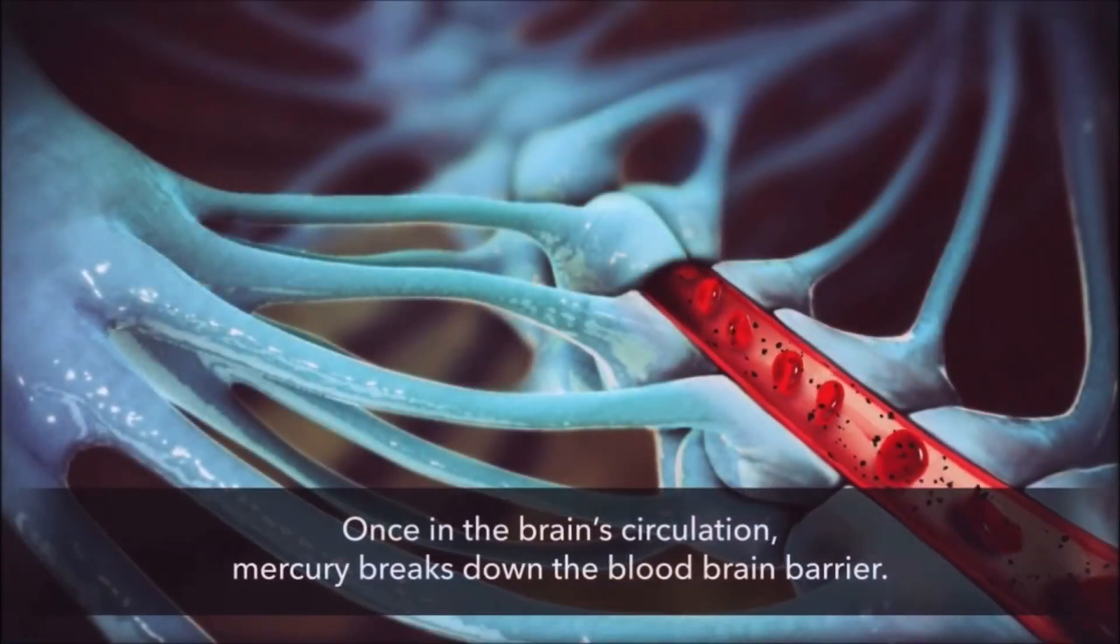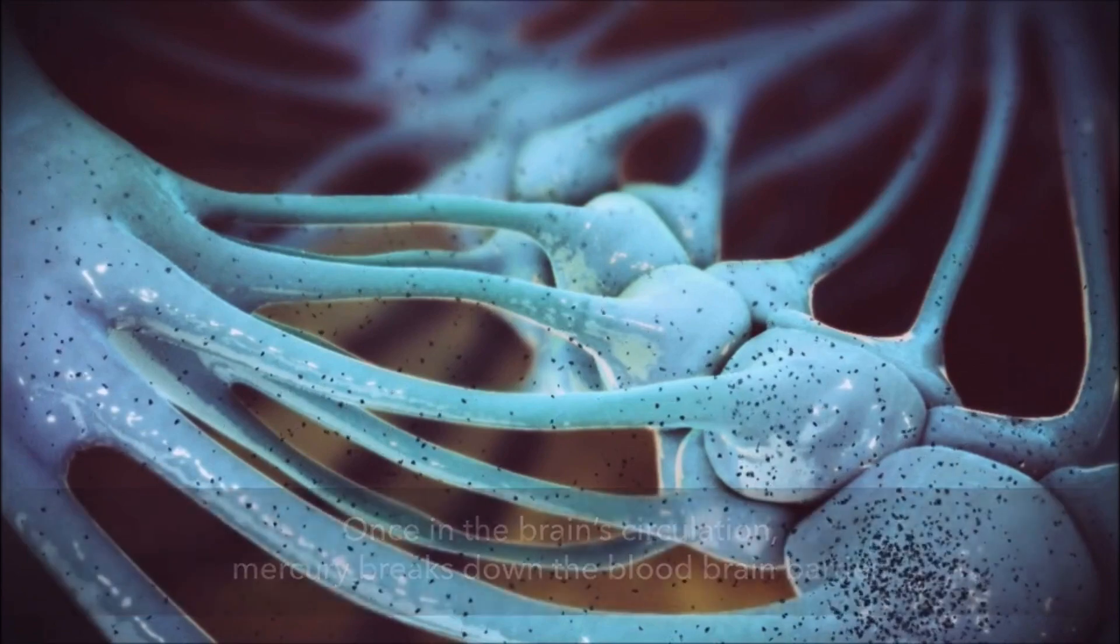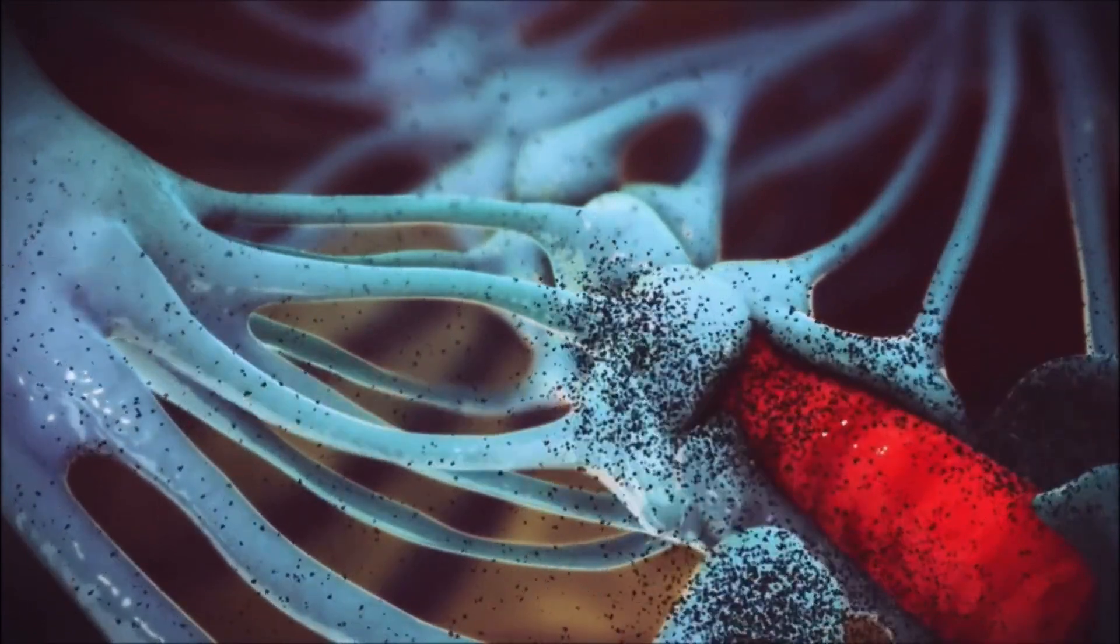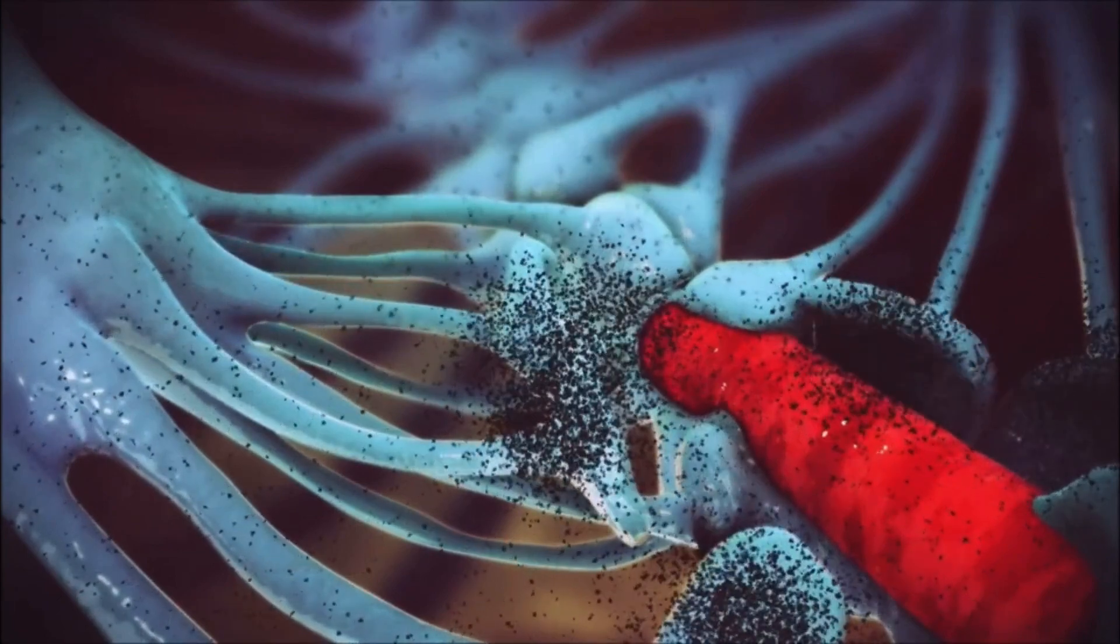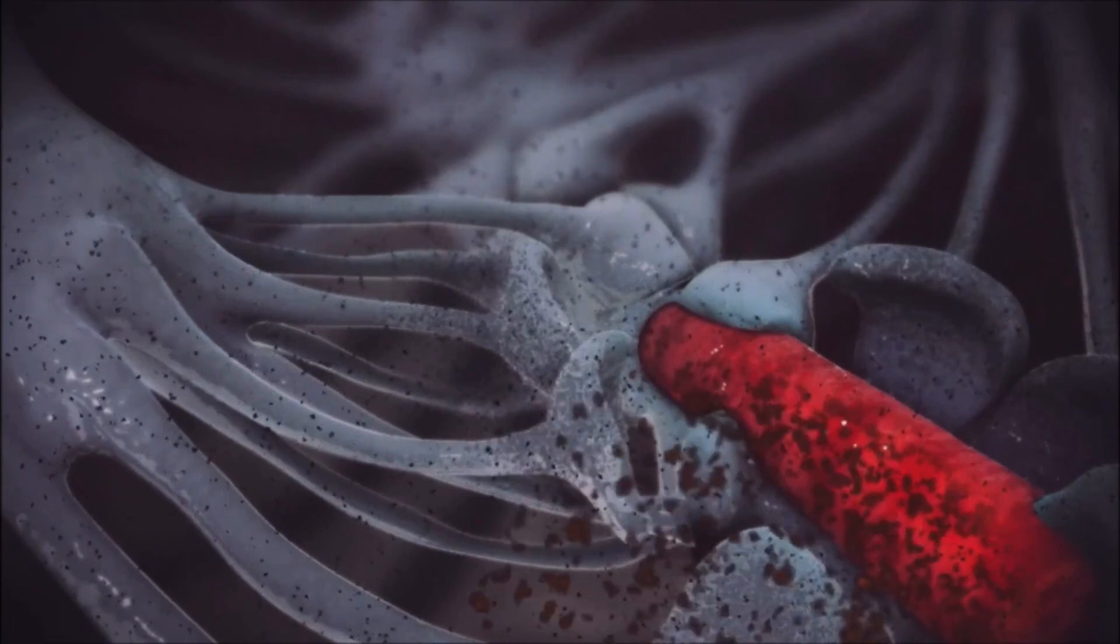Interrupting the function of the barrier, the barrier releases its protective mechanism. Once the barrier releases, the mercury is free to travel inside the brain tissue and inside the tissues of the central nervous system.